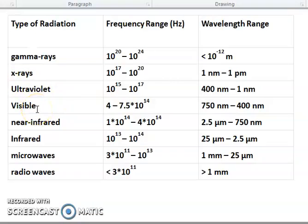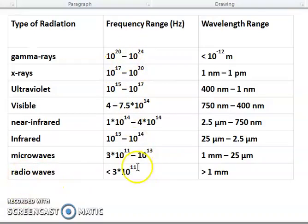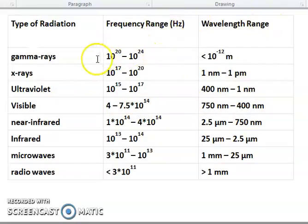Next, we go for radiation. What are the types of radiation in the Electromagnetic Spectrum? Gamma rays, X-rays, ultraviolet rays, visible rays, infrared rays, microwave rays, near infrared, and radio waves. These are the frequencies and wavelengths given here. This is the detail of the type of radiation.